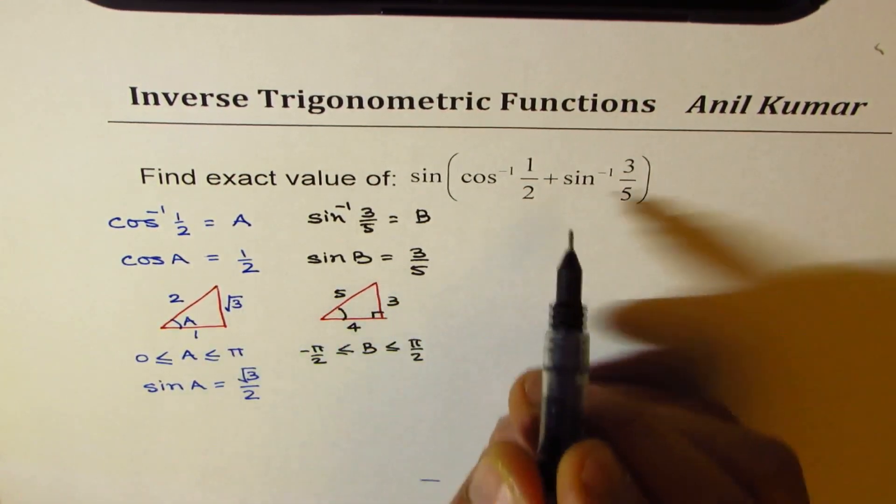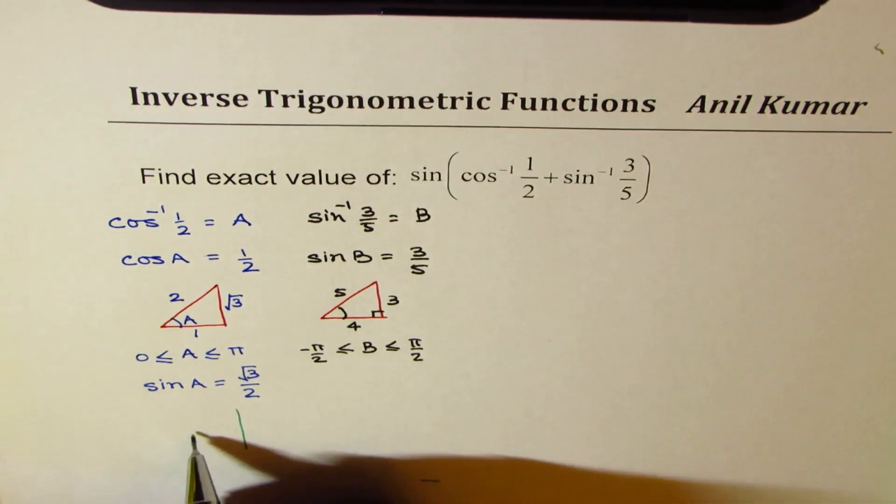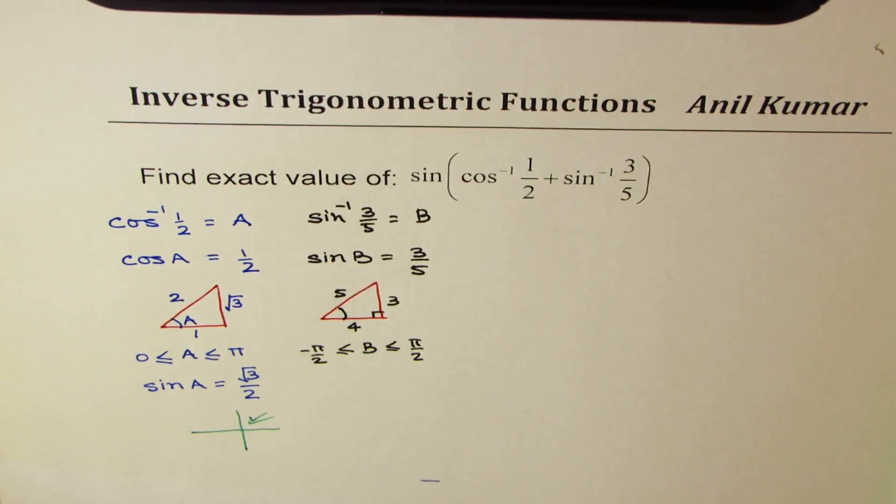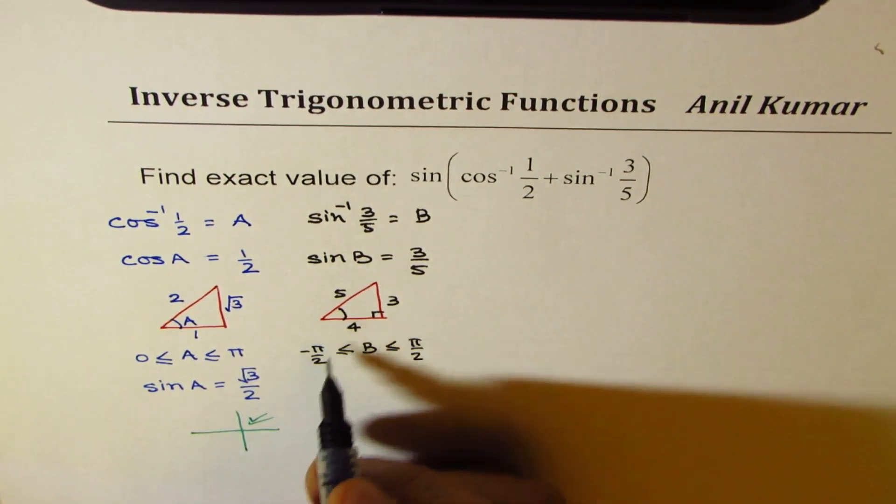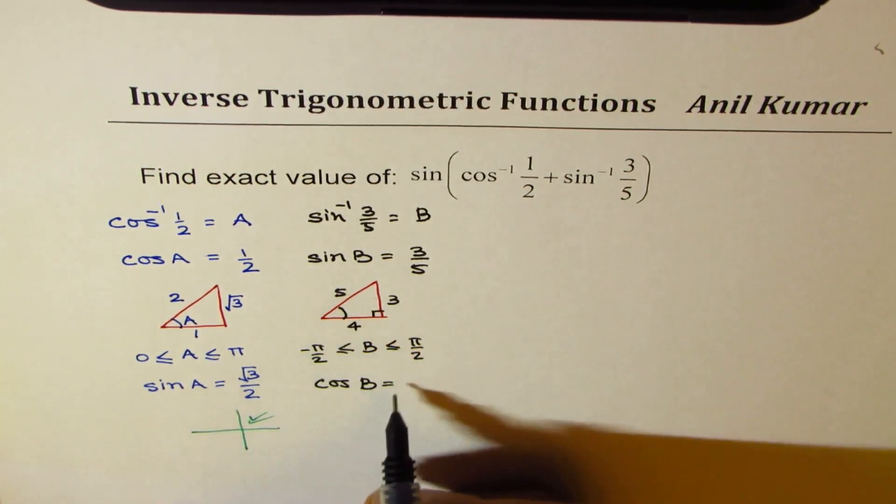So both are in quadrant 1. Both are positive. I should have mentioned it earlier. In this case, both the angles are in quadrant 1 since both are positive. So from here, we can say that the value of cos B should be 4 over 5.